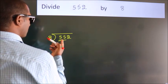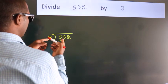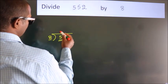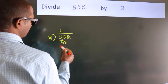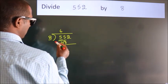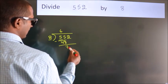A number close to 55 in the 8 table is 8 times 6, which is 48. Now we should subtract. We get 7.